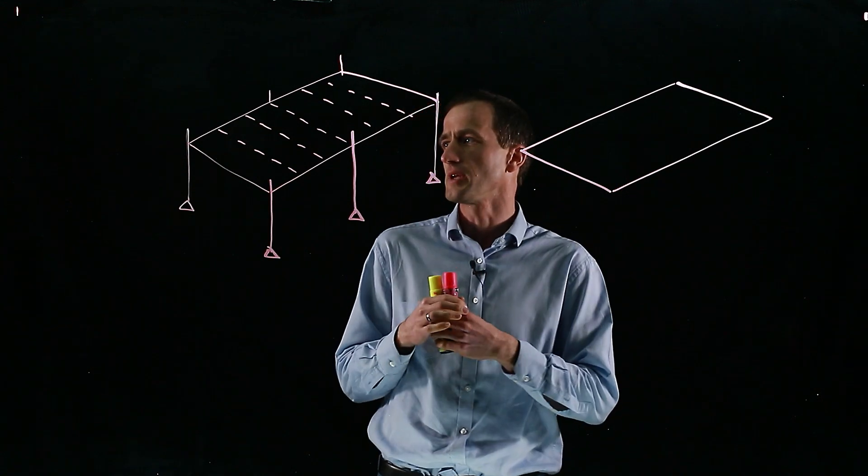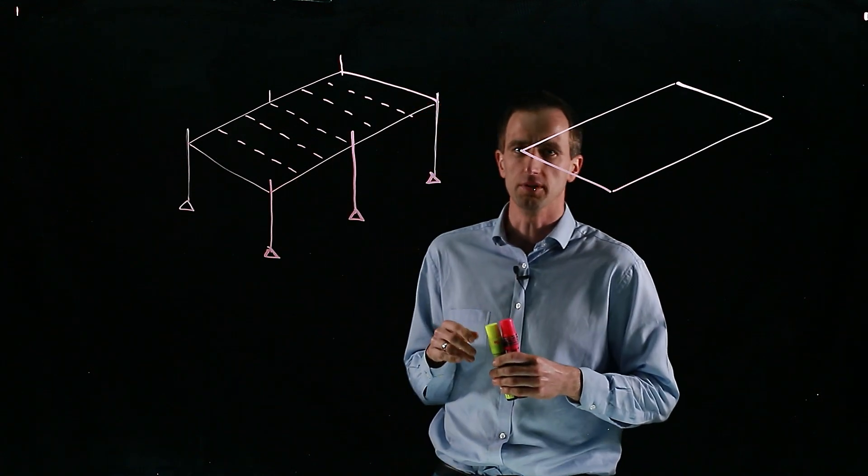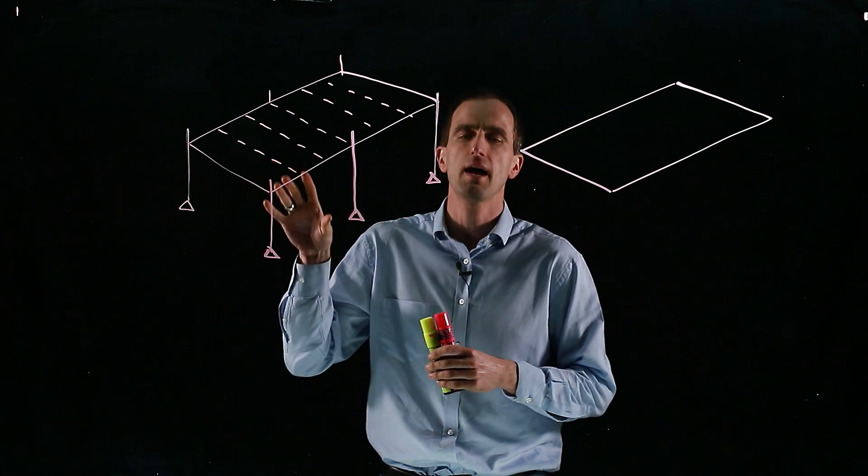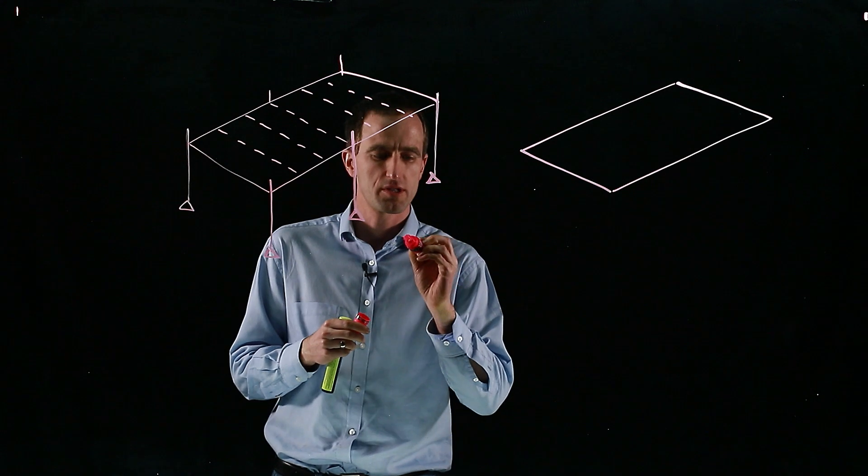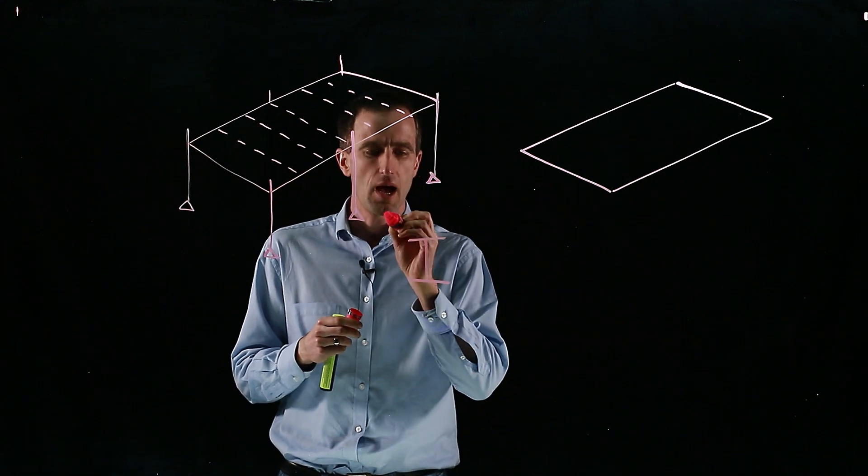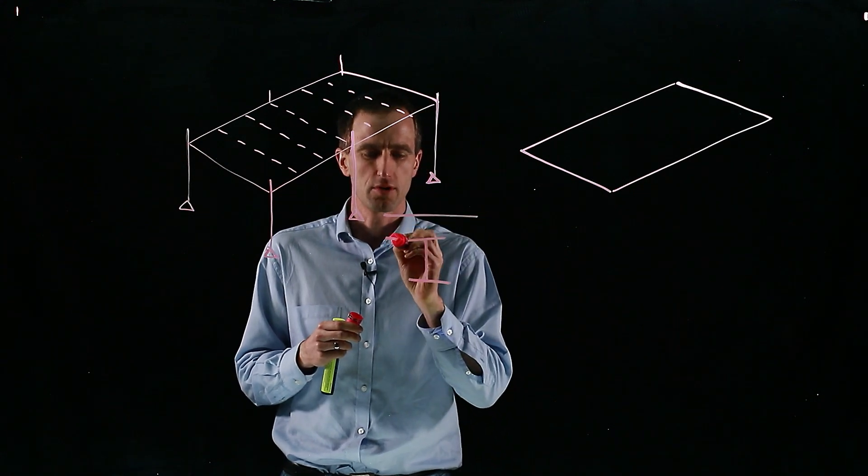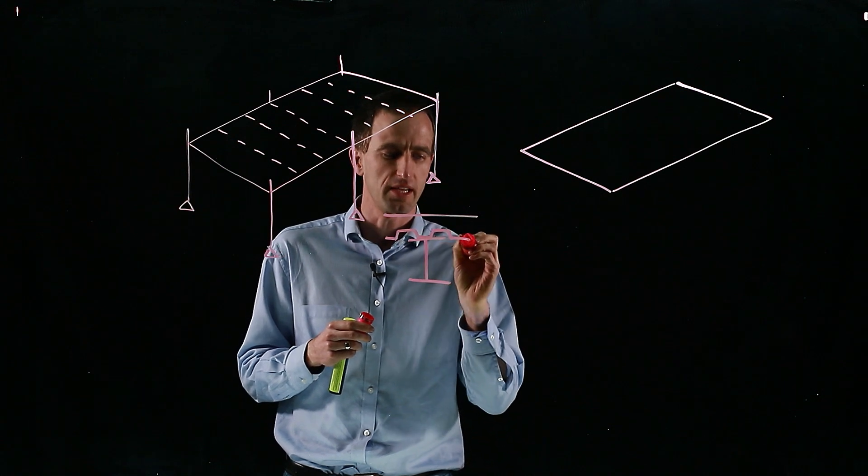What I've got drawn here is a section of a composite building. On top we've got a concrete slab and below it a steel beam supporting it. So a cross-section shows our steel beam with a concrete slab on top. It might be a profile deck or not.